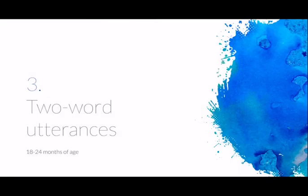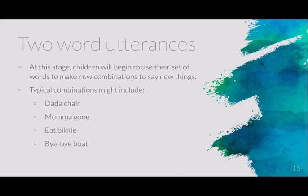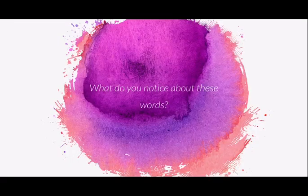The two-word utterance stage starts from around 18 months up to 24 months of age. Children begin to use their set of words to make new combinations. Typical combinations include things like 'dada chair,' 'mama gone,' 'eat bicky,' 'bye bye boat.' They're not particularly sophisticated, but they are creative — the child probably hasn't learned those two words together; they're starting to put the basics of sentences together on their own.